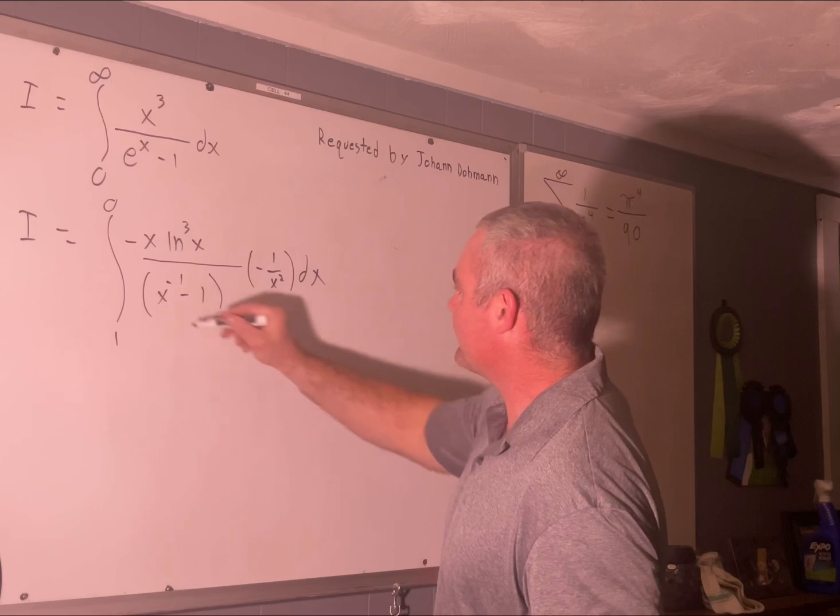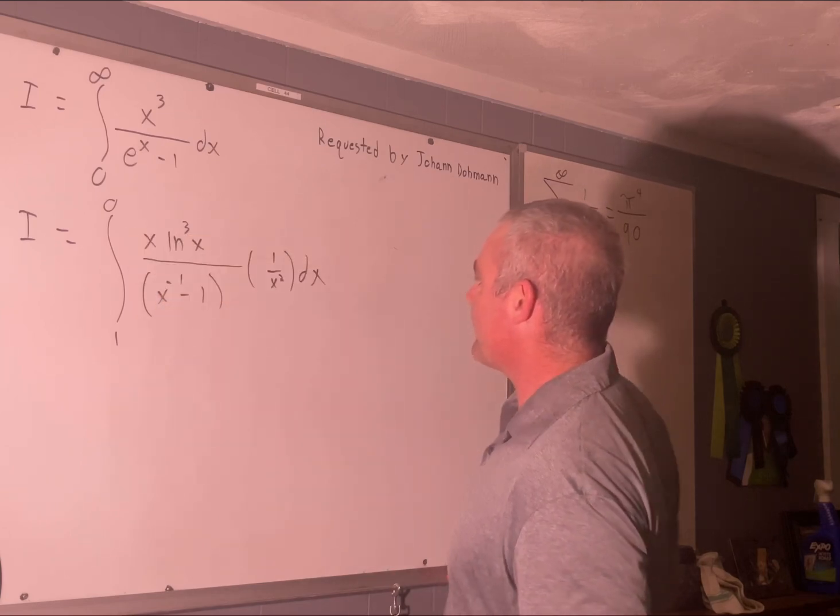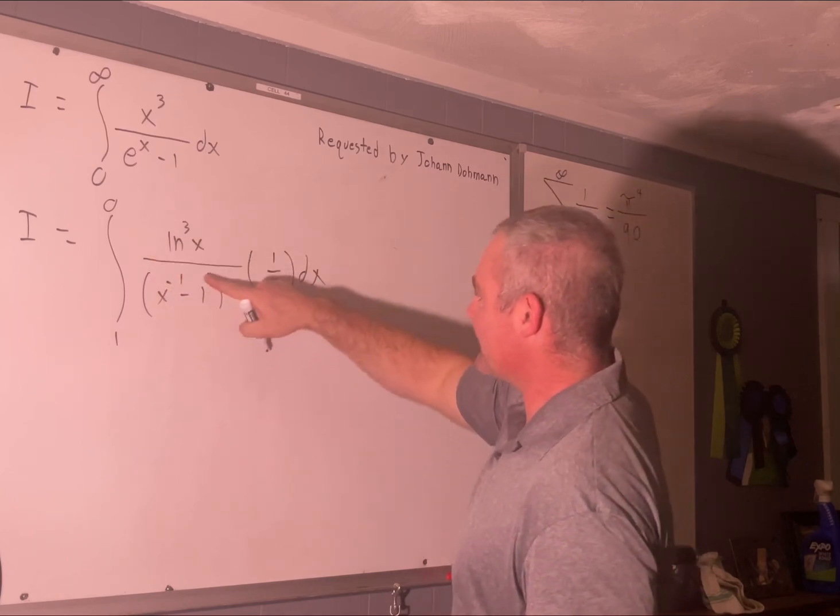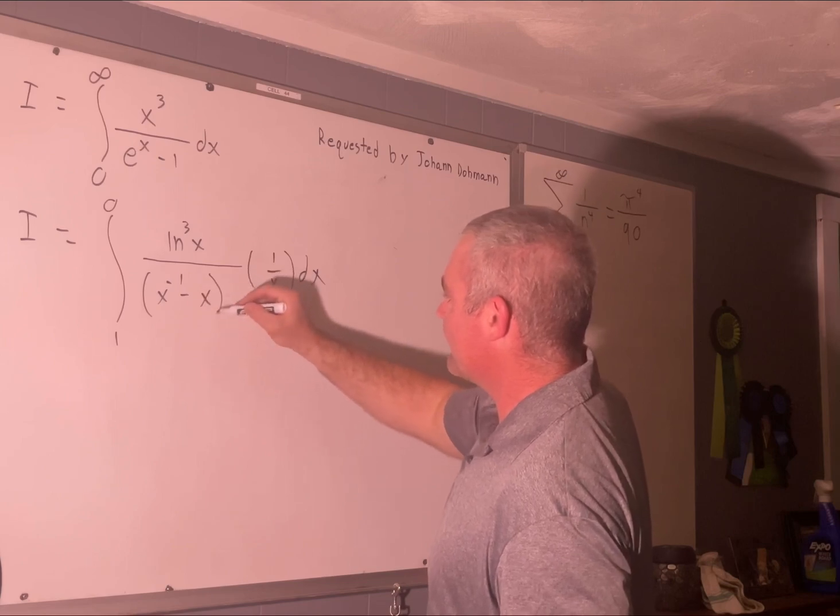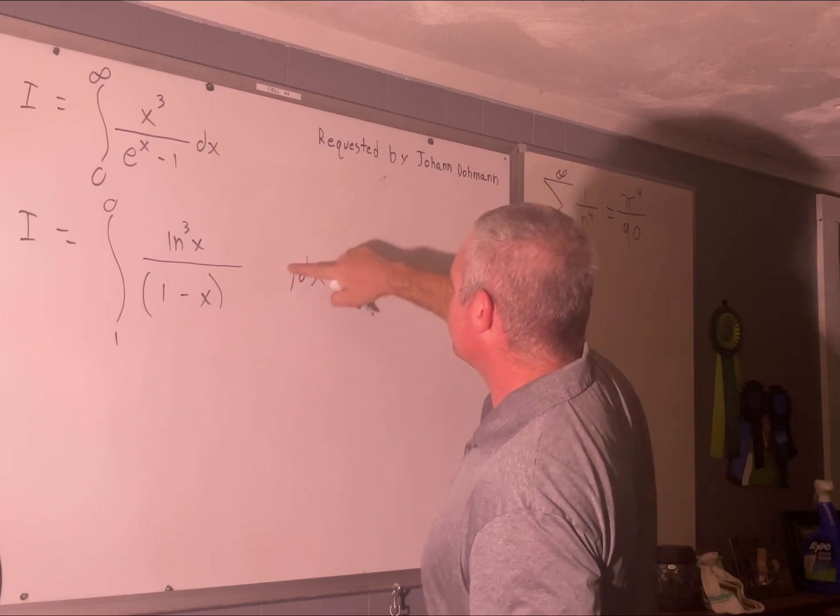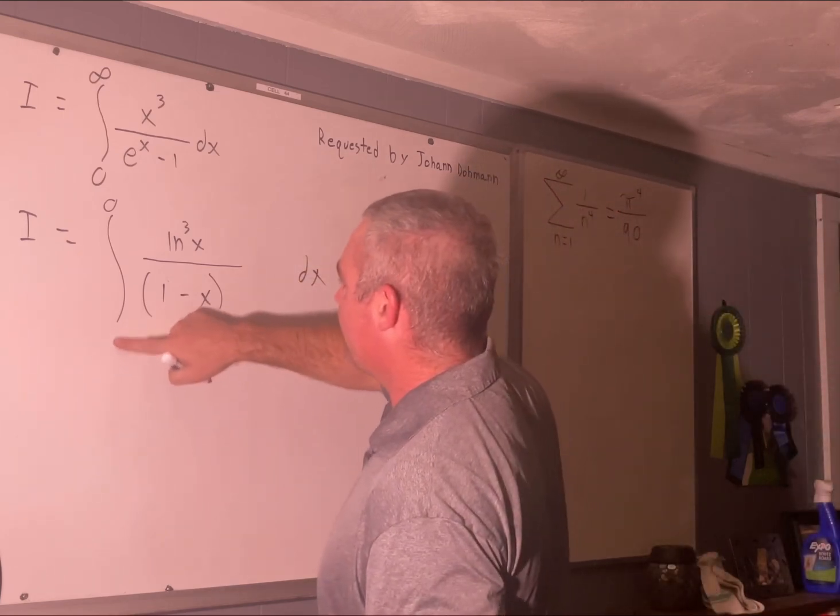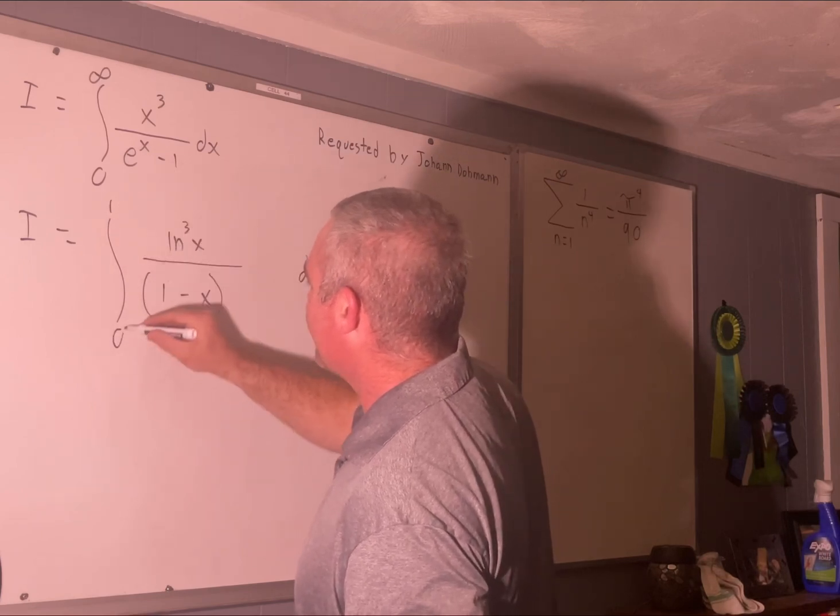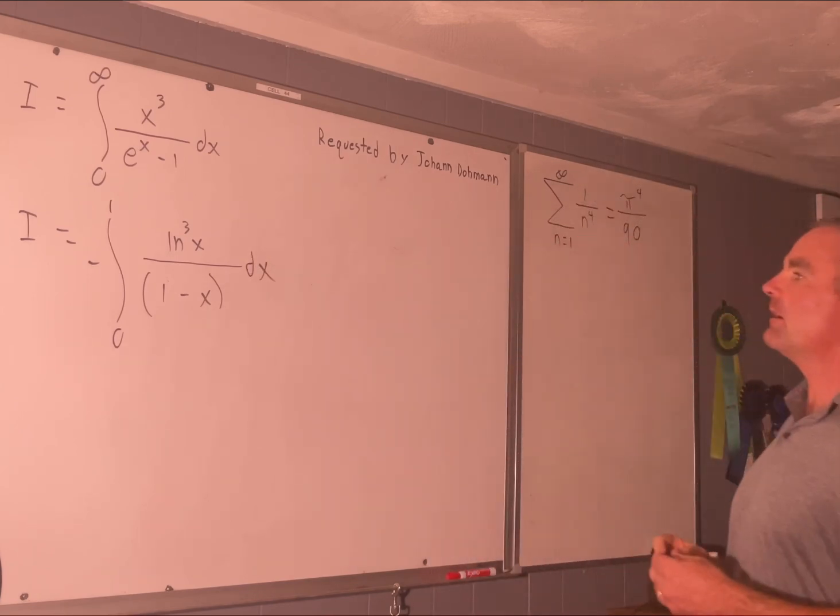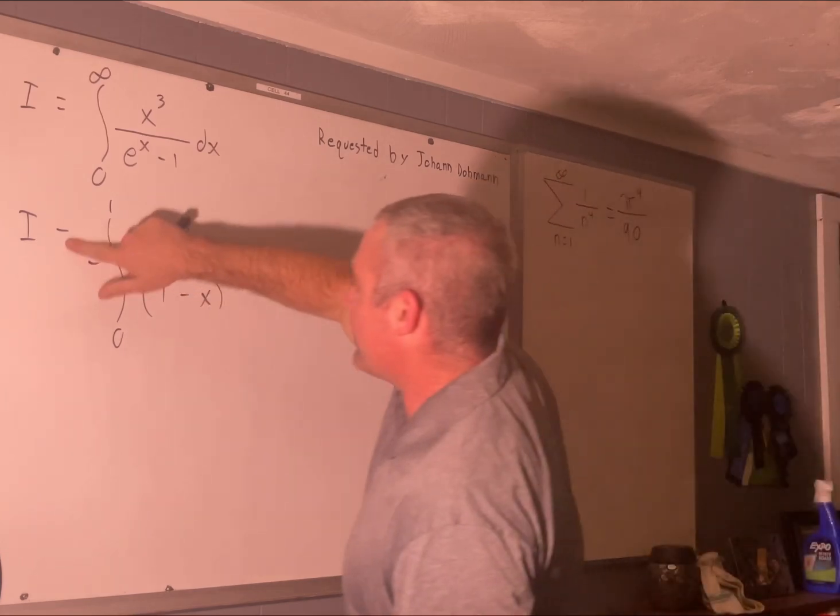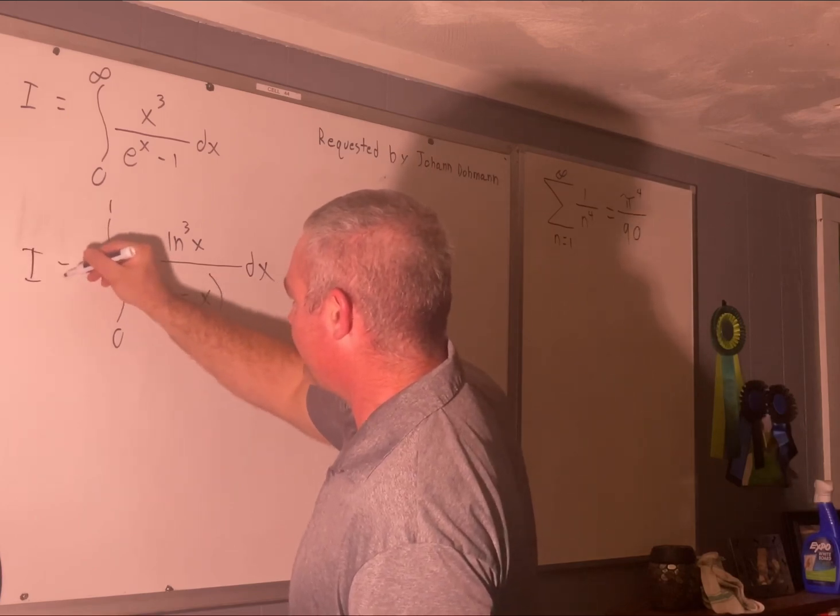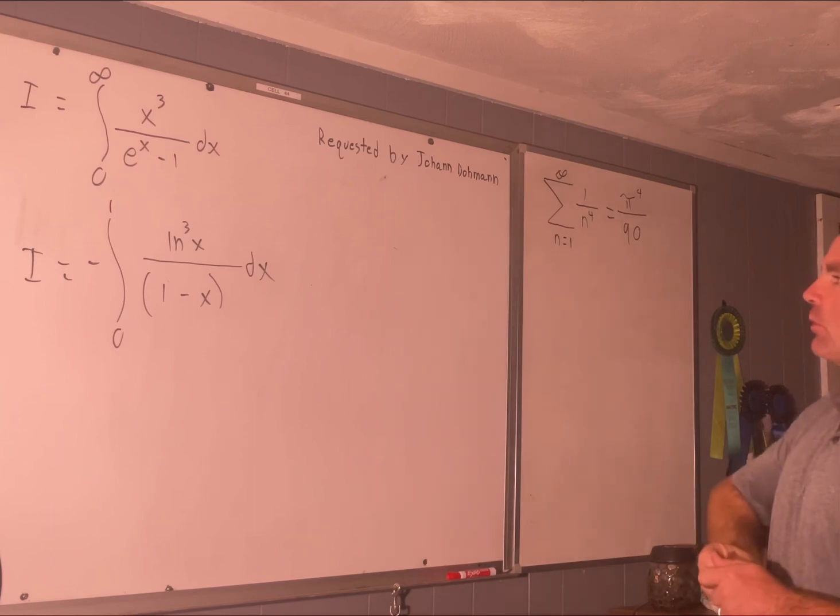So this will become an x to the negative 1. Well, what would our du become? If we're bringing u to 1 over u, then this is going to be negative 1 over x squared. So we'll get negative 1 over x squared dx. This will cancel with that. We'll use one of these x's to cancel this x. We'll distribute this x into here, making this an x and this a 1. And we'll switch the bounds and introduce a negative sign.